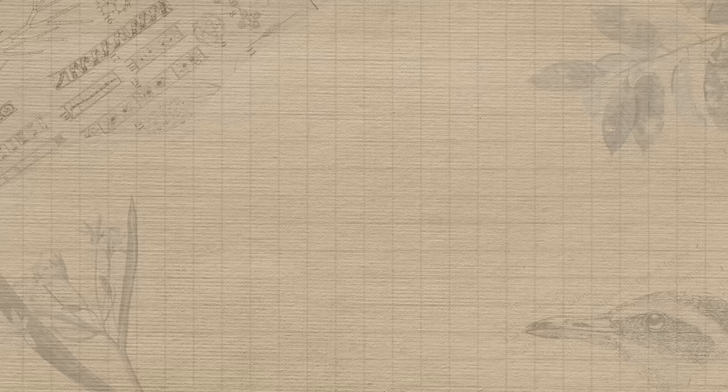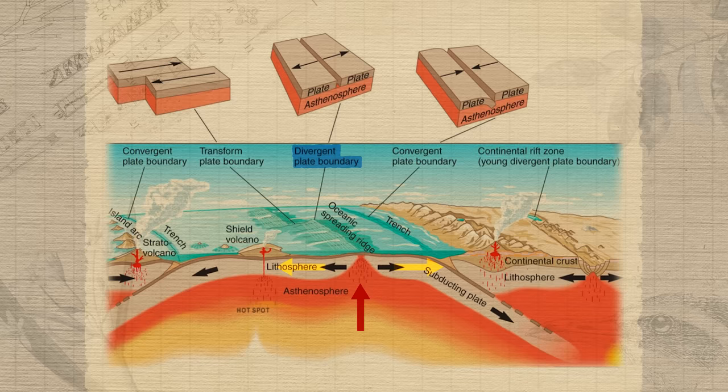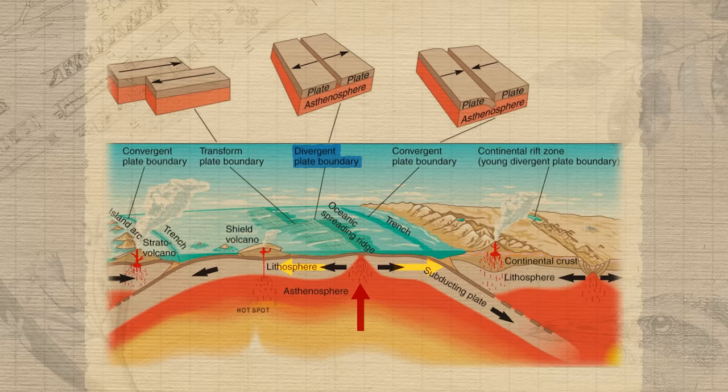The first type of plate boundary we'll review is a divergent boundary, where plates are moving away from each other due to a particularly hot portion of the mantle where magma is rising towards the surface and pushing them apart. Because this typically happens between two oceanic plates, we call it seafloor spreading. This is how we get mid-oceanic features like trenches and underwater ridges.